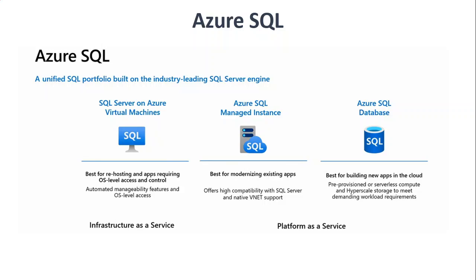Azure SQL has three deployment models. The first one is SQL Server on Azure Virtual Machine. It is an infrastructure as a service model — basically SQL Server running on an Azure Virtual Machine. Microsoft manages the host and infrastructure, while we as users manage the operating system and the SQL Server application. It's best for migration of SQL Server applications that require OS-level access.